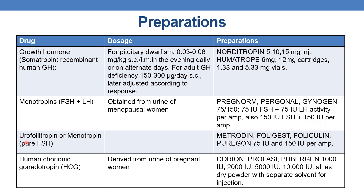The next drug is urofollitrophin or menotrophin, which is pure follicle stimulating hormone. Preparations are Metrodin, Folligest, Folliculin, and Puregon, which contains 75 IU and 150 IU per ampoule.